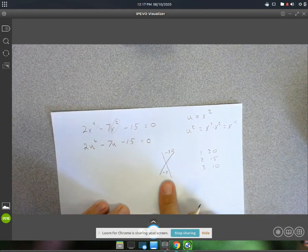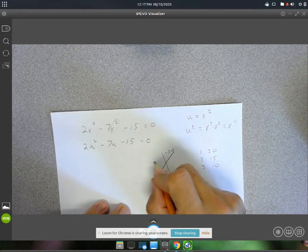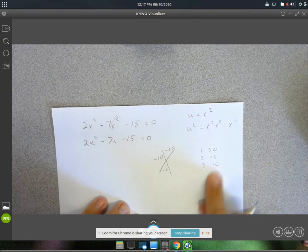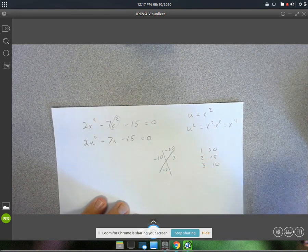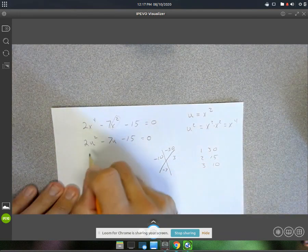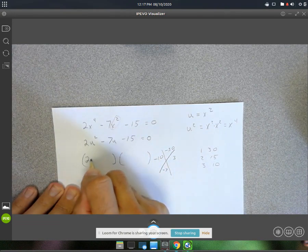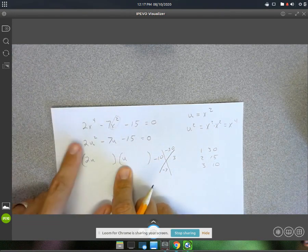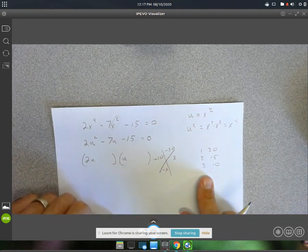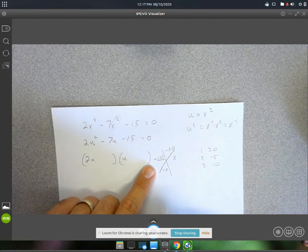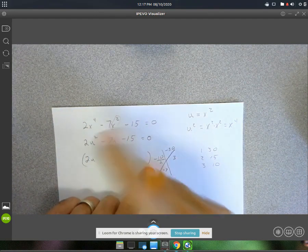So because this is negative, I know the sign of the bigger number between those two has to be negative. And the 3 will be positive. Well, I guess I already knew it was going to be 2u, didn't I? Because that's the only way you can multiply to get that. We have to divide each of these by 2. That's our a term.